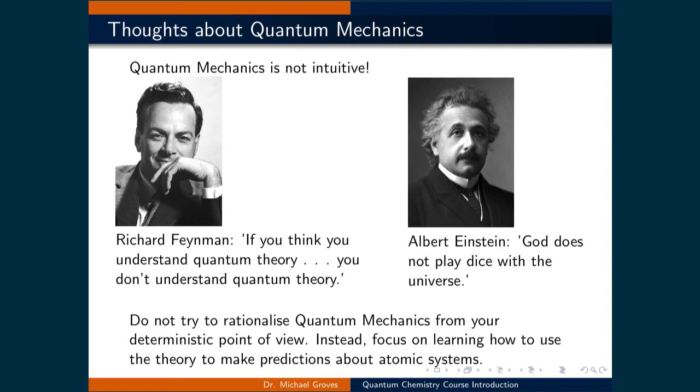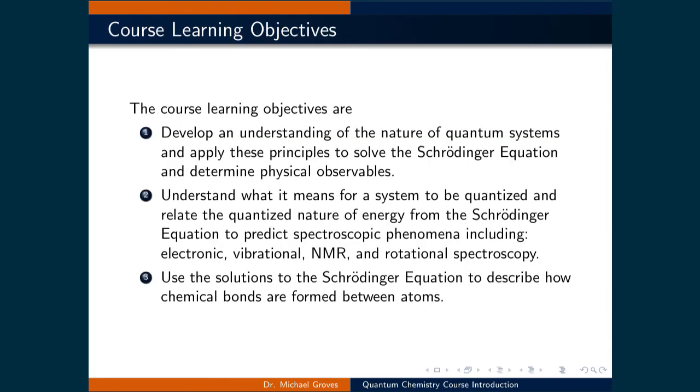Arguably two of the smartest people of the 20th century had trouble rationalizing quantum mechanics. Einstein did not like the probabilistic nature of the theory and famously said that God does not play dice with the universe. While Richard Feynman is quoted as saying that if you think you understand quantum theory, you don't understand quantum theory. With this in mind, this course has three learning objectives.